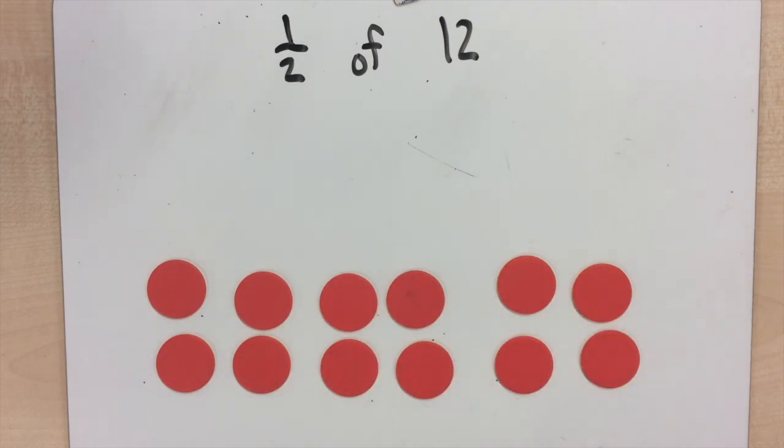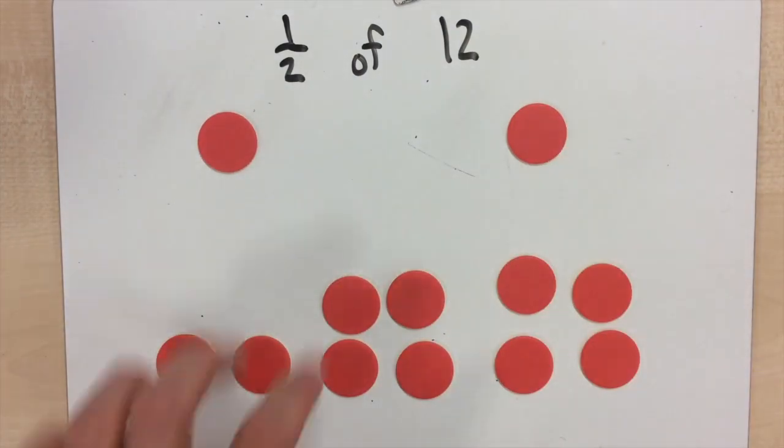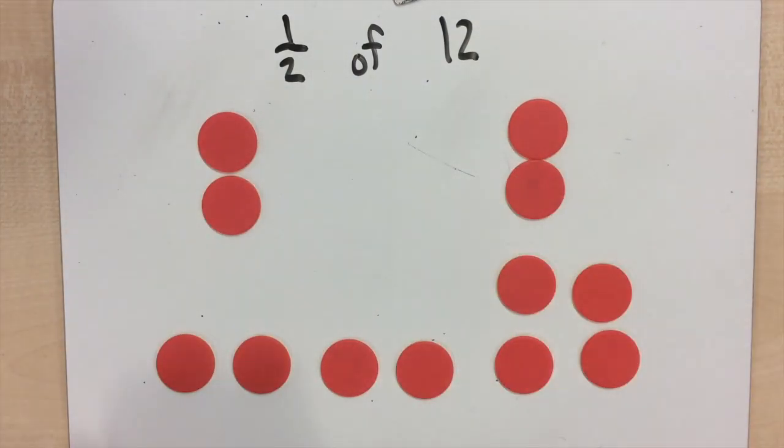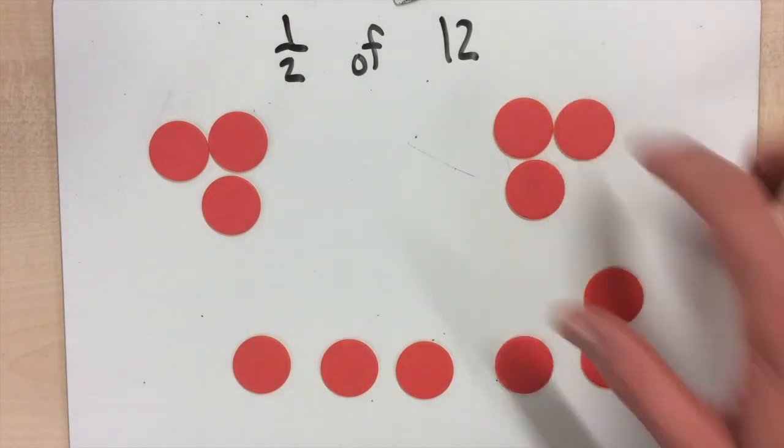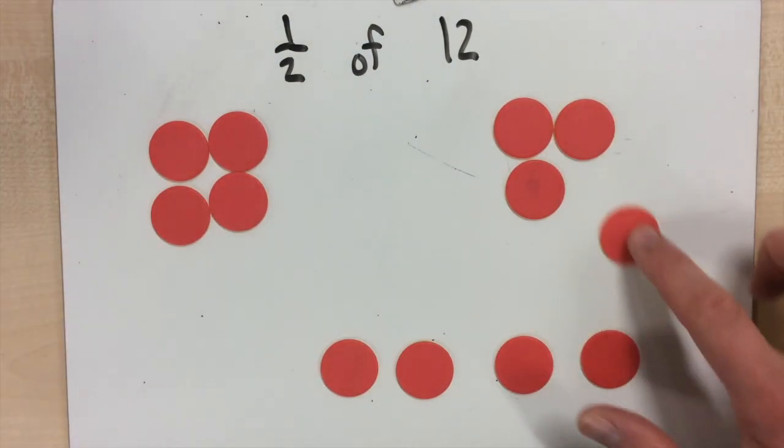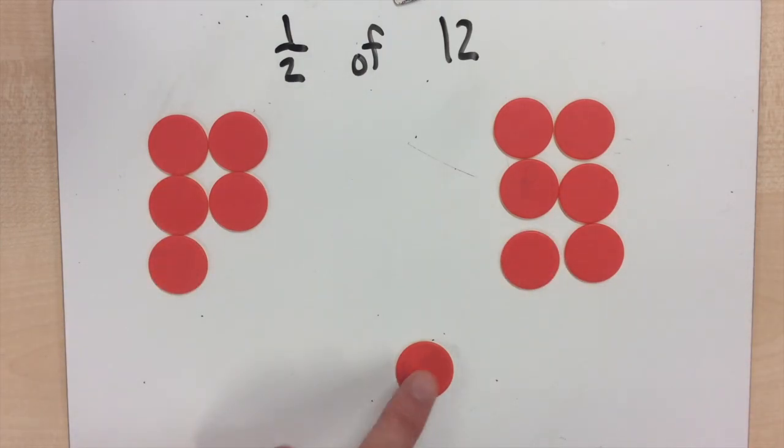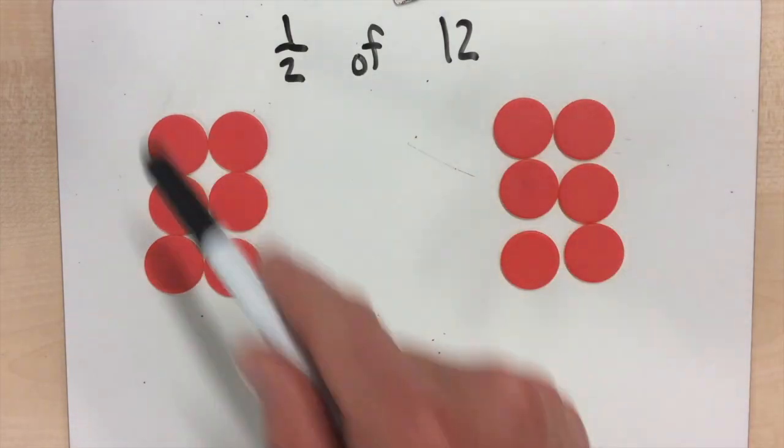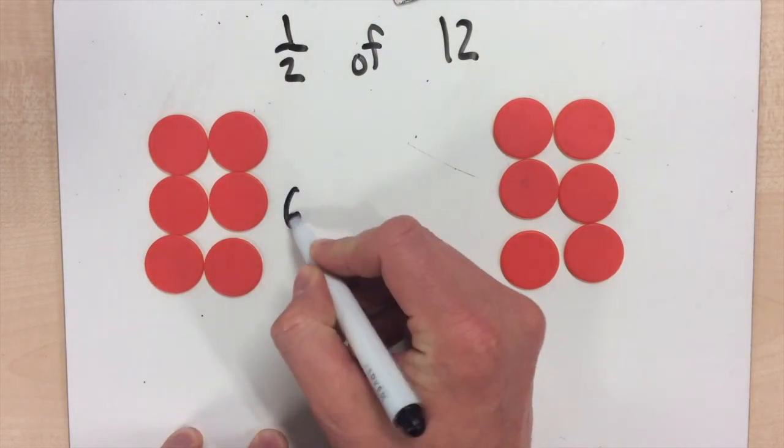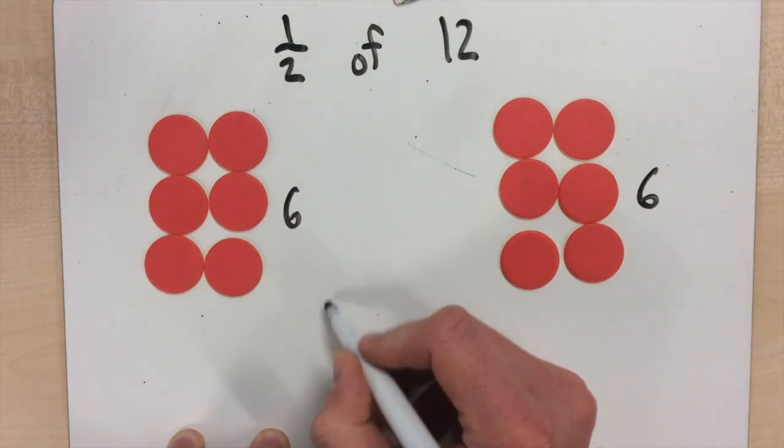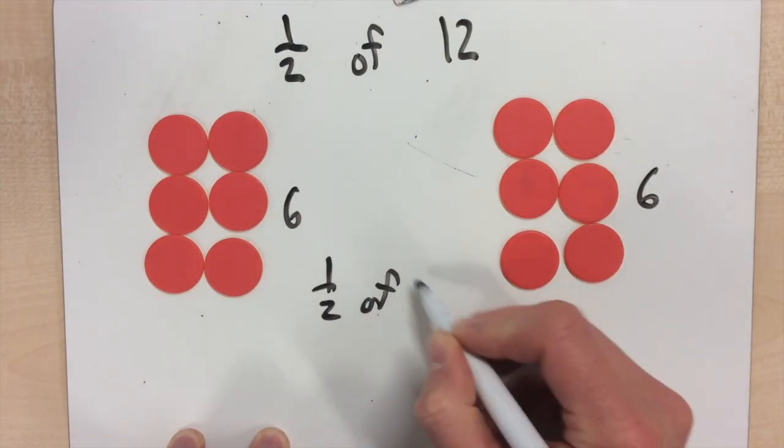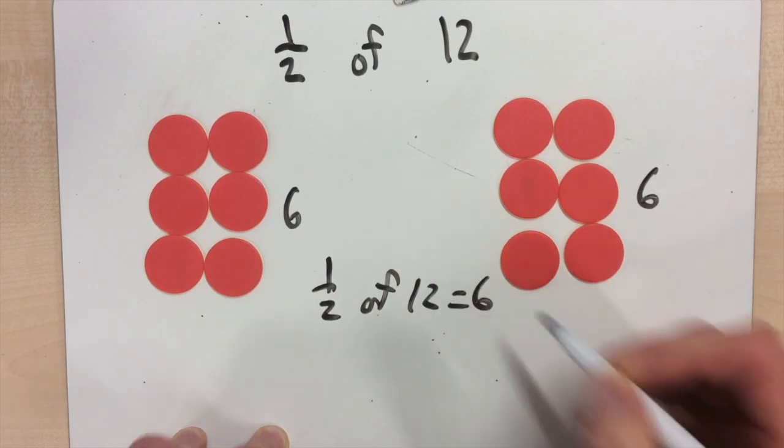So I've got my 12 counters here. I'm going to put them one at a time in two different groups. So we've got 1 and 1, 2 and 2, 3 and 3, 4 and 4, 5 and 5, 6 and 6. So each group in this case has 6 and 6. So 1 half of 12 equals 6.